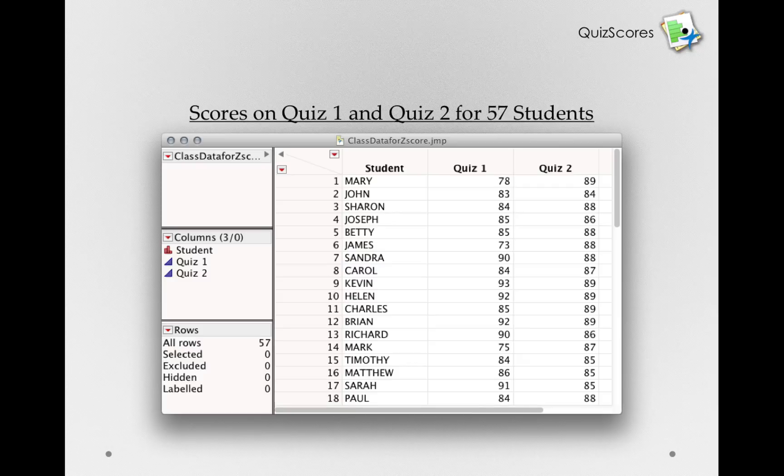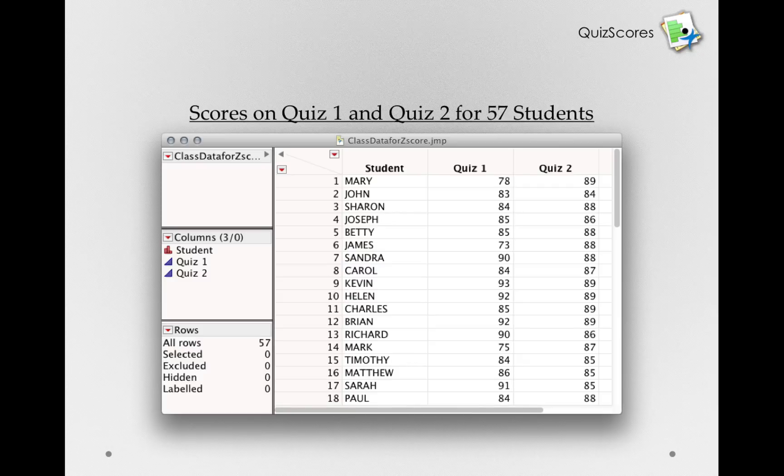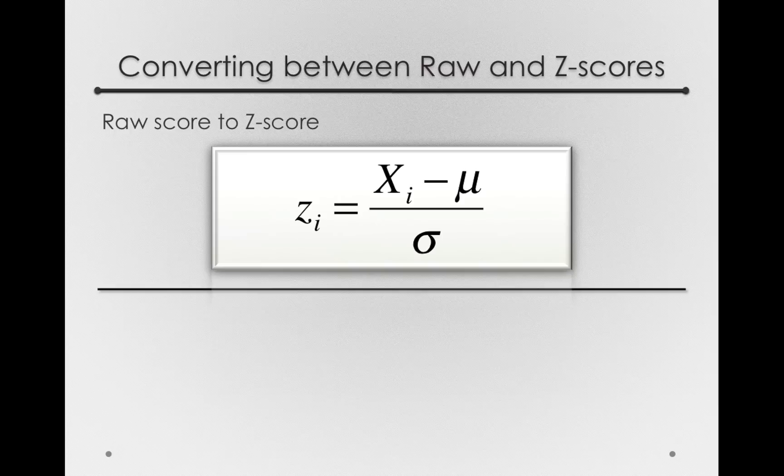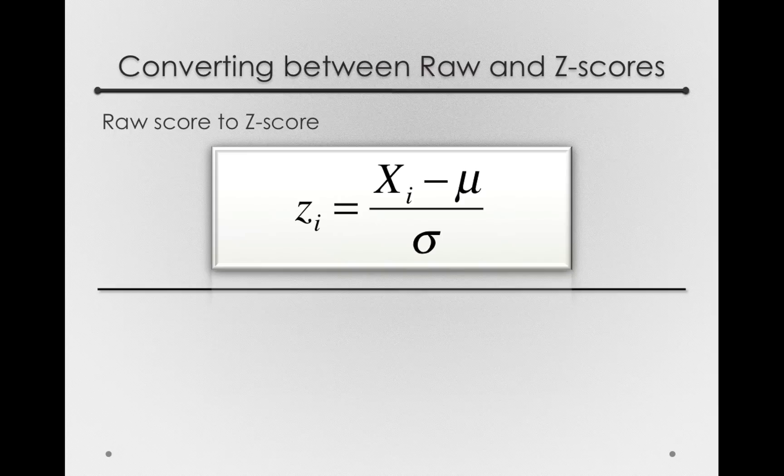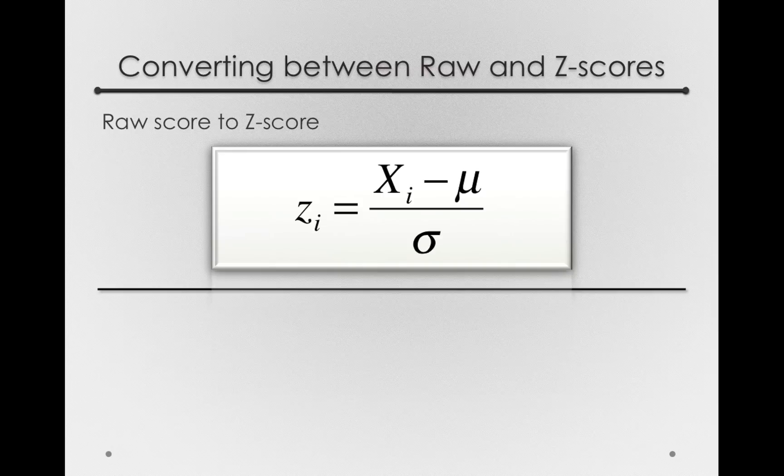It means 1 standard deviation above the mean. So the formula we had, going from a raw score to a z-score, really does encapsulate the information about the mean and the information about the standard deviation.